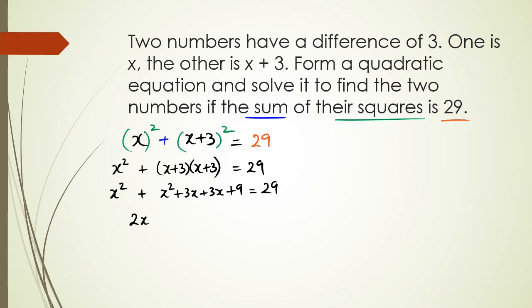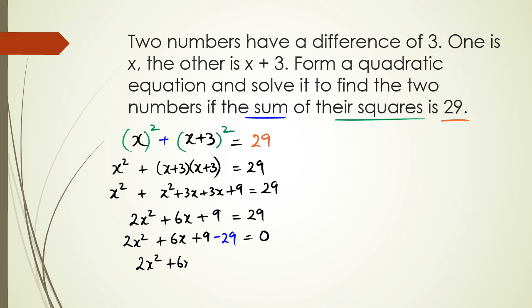Collecting like terms and simplifying: 2x² + 6x + 9 = 29. Now I want the quadratic to equal zero, so I shift the 29 to the left, giving 2x² + 6x - 20 = 0.